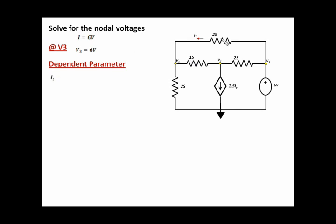When we describe IY, we can say that IY will equal to 2 — that's the two Siemens — times V3 minus V1. But I already know V3 equals 6 volts, so when I substitute for V3, what I will have is 12 minus 2 times V1. So this is basically the IY parameter that defines this current source.